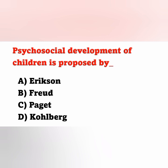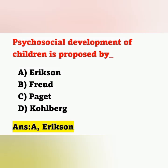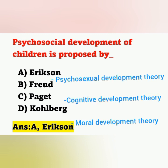First question: Psychosocial development of children is proposed by — Option A: Erickson, Option B: Freud, Option C: Piaget, Option D: Kohlberg. The stages of psychosocial development theory was proposed by Eric Erickson, so Option A is the correct answer. Sigmund Freud proposed the psychosexual development theory, and Jean Piaget proposed the cognitive development theory.